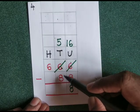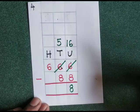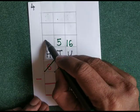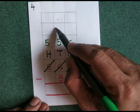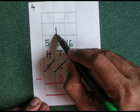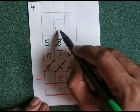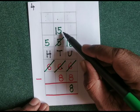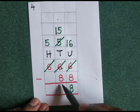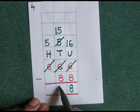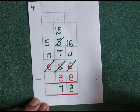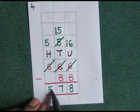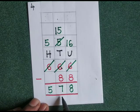Now 5 minus 8 — we can't do that, so we borrow from the hundreds place. We borrow 100 from 600; here 500 will remain. That 100 means 10 tens; 10 tens plus 5 tens gives us 15 tens. 15 minus 8 is 7, and here we get 5. The answer is 578.